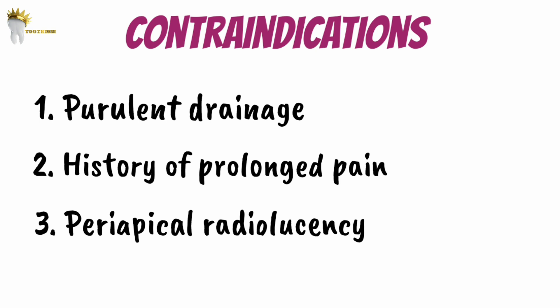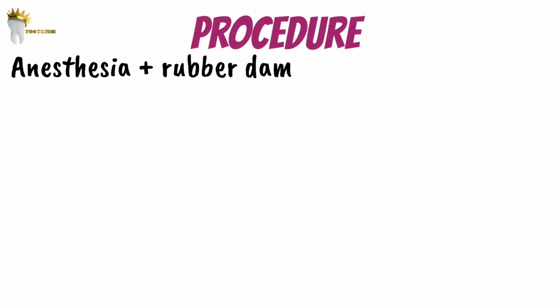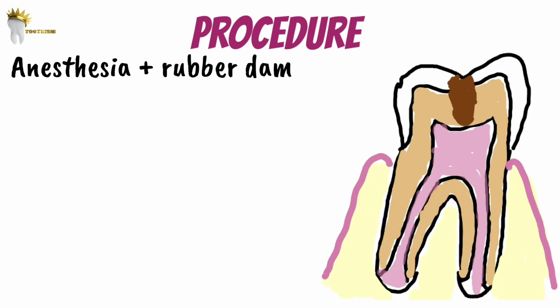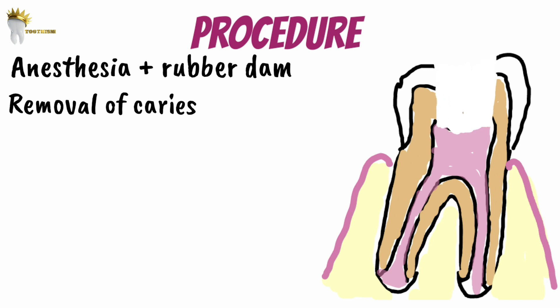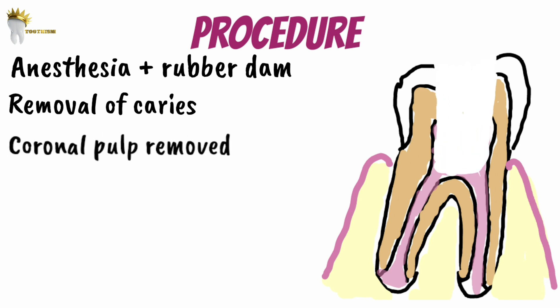Let's go through the procedure. The first step is administration of local anesthesia and placement of a rubber dam. Following this, all the caries is removed and the access opening is done. Then removal of the coronal pulp tissue is performed. One has to be very careful that the radicular pulp is not disturbed while doing so.